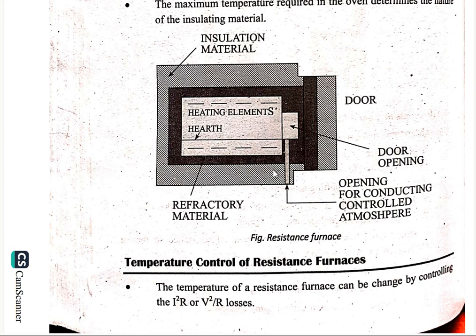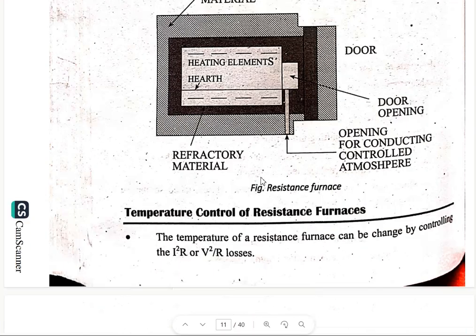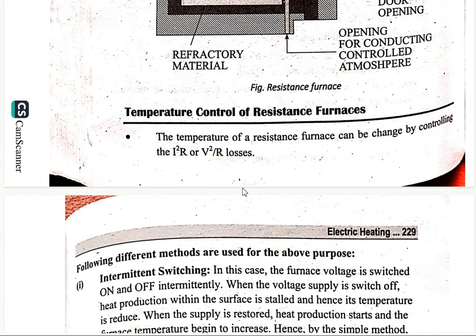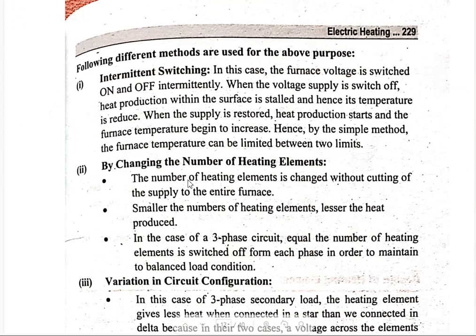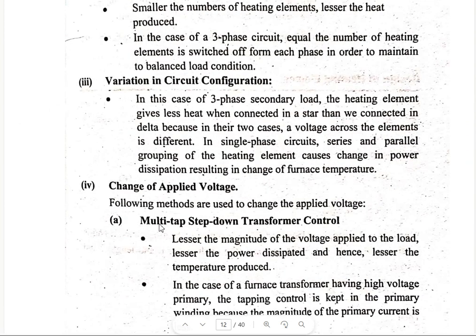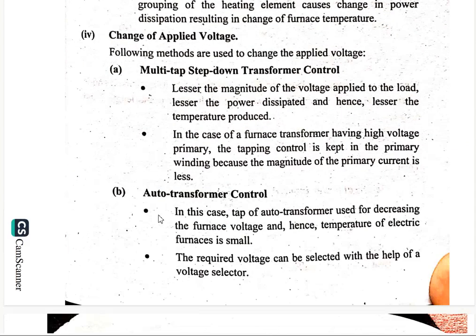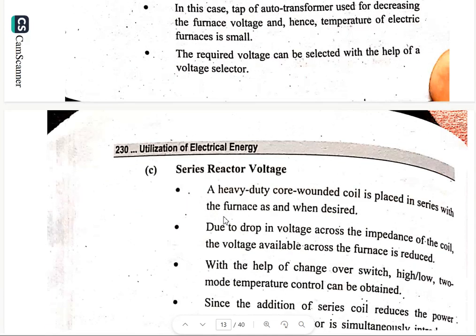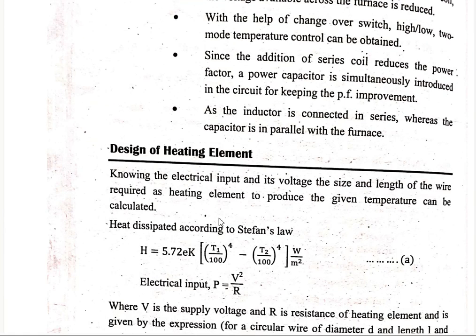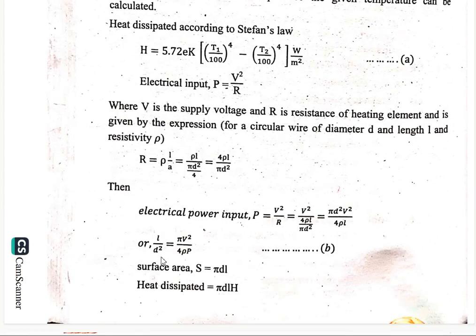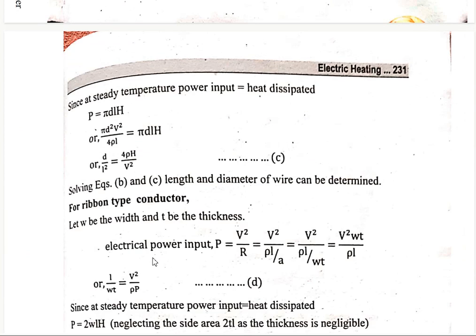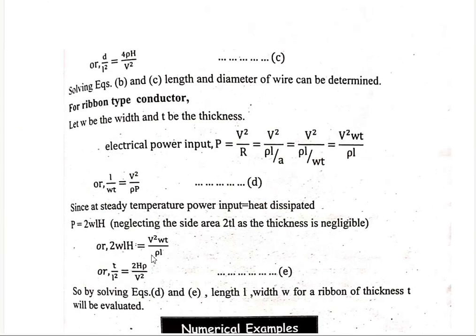For temperature control of resistance furnaces, different methods are used: intermittent switching, changing the number of heating elements, variation of circuit configuration, change of applied voltage, multi-tap step-down transformer control, automatic transformer control, series reactor voltage, and design of the heating element. The formula P equals V squared over R is important to remember for these calculations.